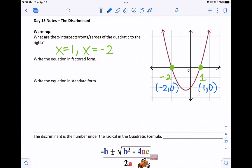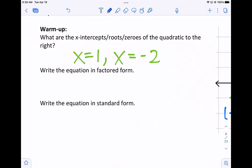Number two, write the equation in factored form. Factored form is the opposite of the 0, so it would be x minus 1, x plus 2.